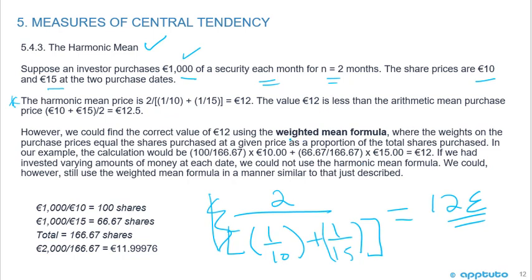If you have trouble remembering that formula for the harmonic mean, I think an easier way is to remember this is just a weighted average. You spent €1,000 at €10, so you got 100 shares. The second month, €1,000 at €15, you got 66.67 shares. Your total was 166.67 shares. The weighted average is €2,000/166.67 = €11.99976, rounding to €12. My advice is pick a method and stick to it. Don't be intimidated by trying to memorize another formula. Just use the weighted average and you'll get the same answer.